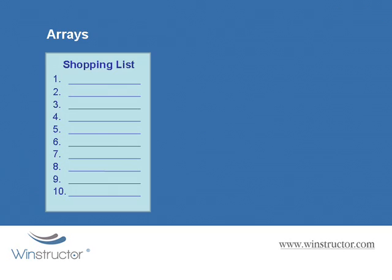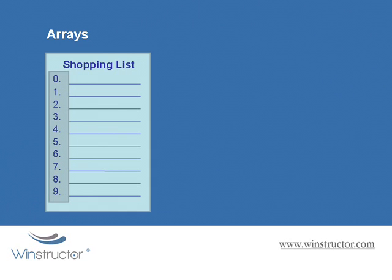Imagine that you have a blank shopping list with 10 lines on it that you can fill in. Each of those 10 lines you can write in a product that you need to buy when you go shopping, and each of these 10 lines is called an element. One of the first things you need to understand is that unlike our shopping list which has 10 items numbered 1 to 10, in an array those same 10 elements will be listed from 0 through to 9, because arrays start at 0, not 1.